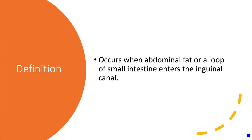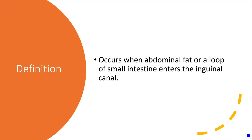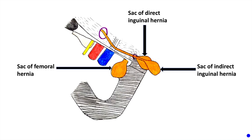An inguinal hernia occurs when the abdominal fat or a loop of small intestine enters the inguinal canal. The two types of inguinal hernia are direct and indirect hernia, which will be discussed later in detail in this video. This diagram shows the relative locations of the different types of hernia — the sac of femoral hernia, the sac of indirect inguinal hernia, and the sac of direct inguinal hernia.